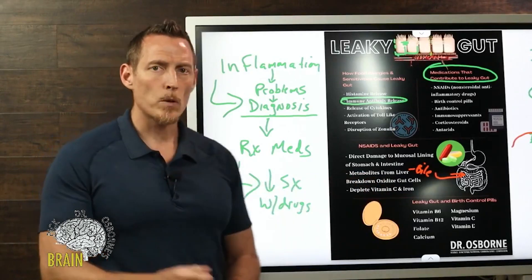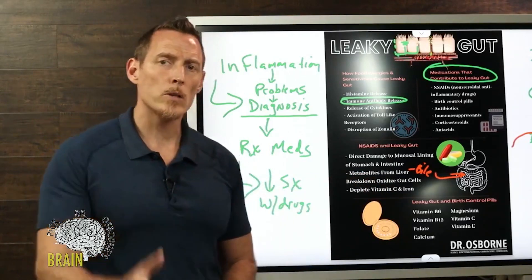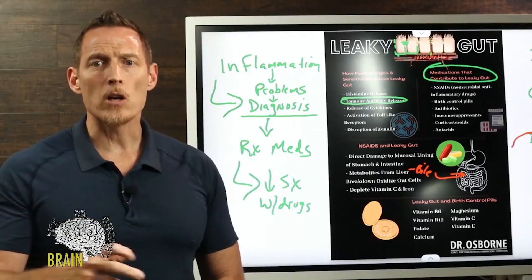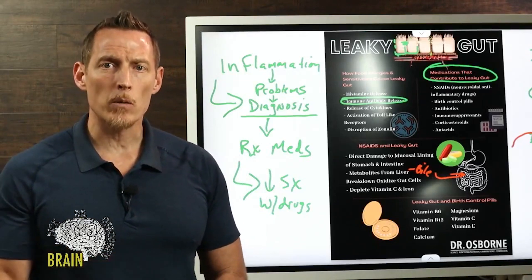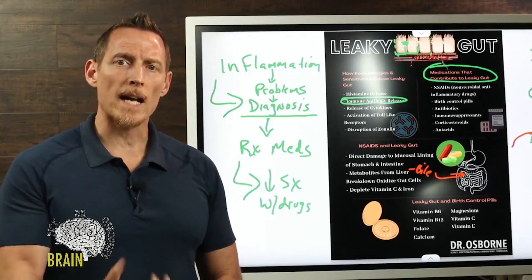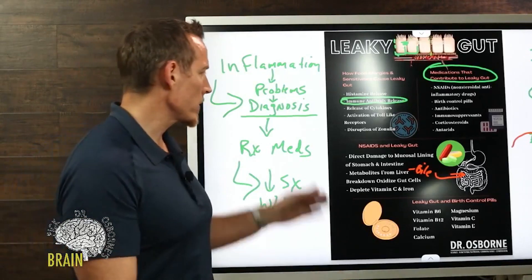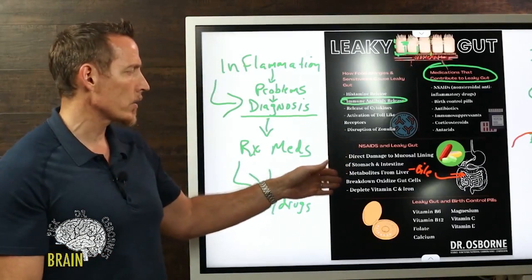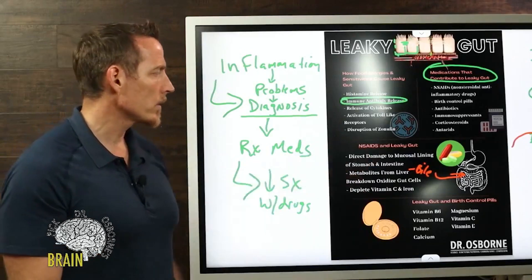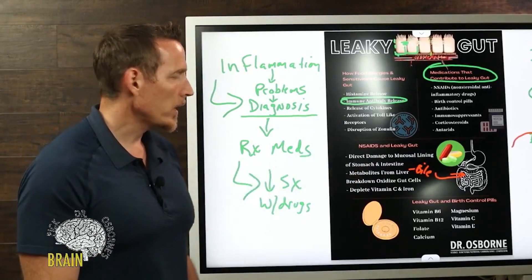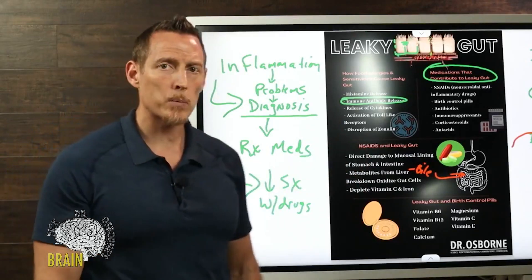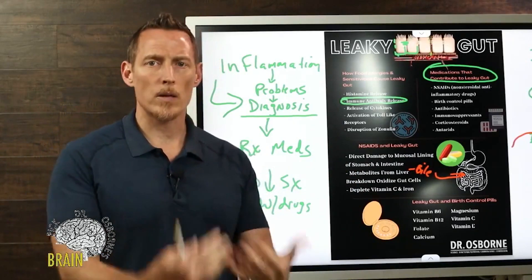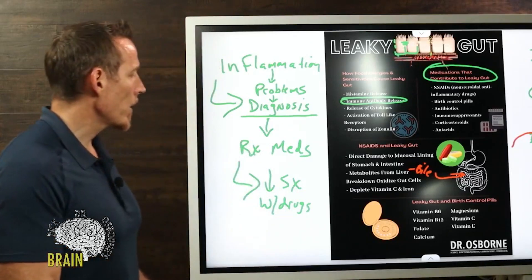Because NSAIDs can deplete vitamin C, they reduce your body's capacity for healing and repair. And because they reduce iron, they can cause anemia, which means you don't get adequate oxygen to the tissue. When you don't get adequate oxygen and vitamin C to the tissue, it won't heal properly and you end up with chronic inflammatory damage that repeats.